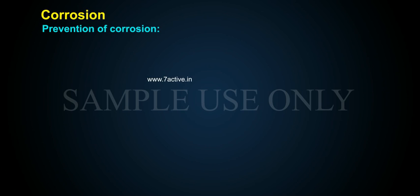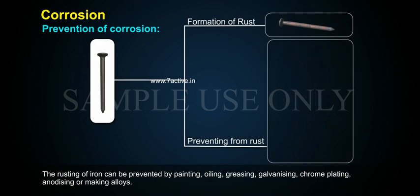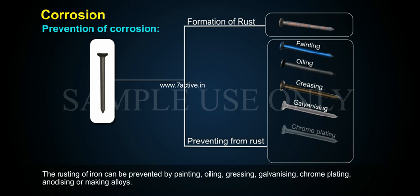Prevention of corrosion. The rusting of iron can be prevented by painting, oiling, greasing, galvanizing, chrome plating, anodizing, or making alloys.